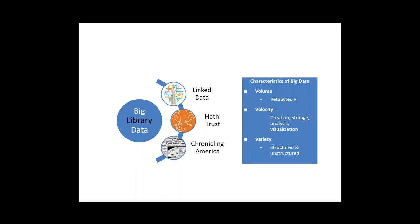HathiTrust and Chronicling America are examples of big-data-level projects that libraries are undertaking in collaboration with other institutions. HathiTrust is a collaboration between academic and research institutions; they have digitized over 11 million books. In terms of velocity, the data capsule — a grant-funded solution — allows researchers who want to do computational data mining of HathiTrust materials to plug in an algorithm into the platform. The algorithm crunches the numbers and spits back the results without the researcher ever interacting with individual items.